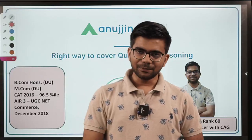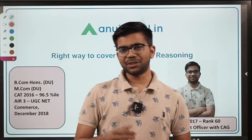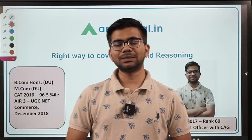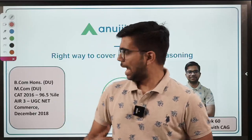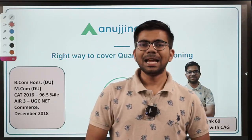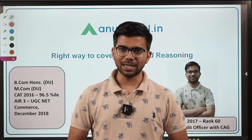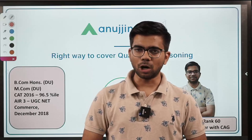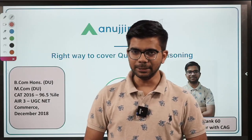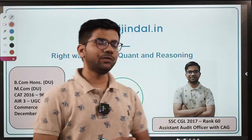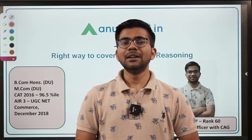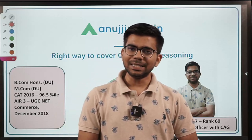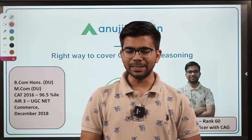A brief about myself before we begin. My name is Chetan. I have done my bachelor's and master's in commerce from Delhi University. I wrote CAT 2016 and scored 96.5 percentile. Moreover, I achieved an all-India rank of 3 in UGC NET Commerce in December 2018, and I have work experience of 1.5 years in CAG as an assistant audit officer after clearing the SACCGN 2017 examination.